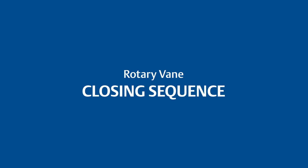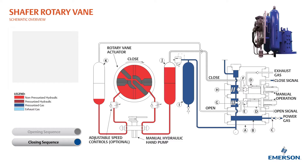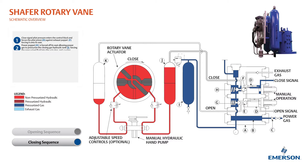This is the theory of operation for the closing stroke for the Schaefer rotary vane actuator. Closed signal pilot pressure enters the control block and forces the pilot piston against the exhaust poppet, forcing it onto its seat. The power poppet is then forced off of its seat.